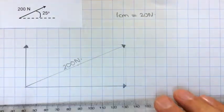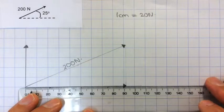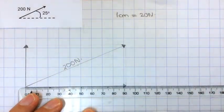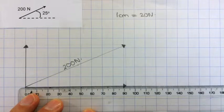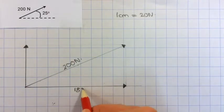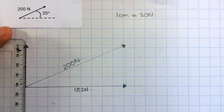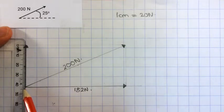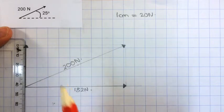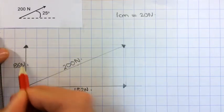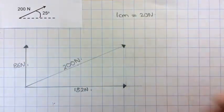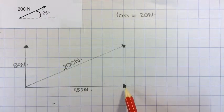And then what I need to do is measure the length of this, and this is 9.1 centimetres which would be 182 newtons—9.1 times 20. And this one is 4.3 centimetres which would be 86 newtons when I multiply it by 20. And there we are. We've split this into two components which if I added them together again would give me the 200 newtons.